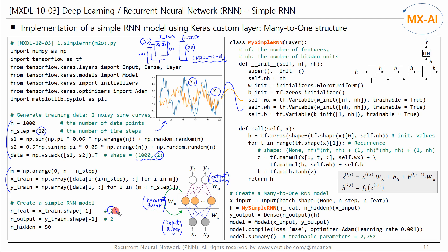The number of features is 2, so the number of neurons in the input layer is 2. Since we are predicting the time-series of each feature, we also have 2 target Y values, so the number of neurons in the output layer is also 2. The number of neurons in the recurrent layer is set to 50, and since the number of time steps is 20, the recurrent layer is repeated 20 times.